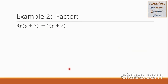Let's have the second example. We have two big groups here — it is a difference of binomials. Look at this first group: it is a product of 3y times the quantity y plus 7, and then minus the second group, which is 4 times the quantity y plus 7.